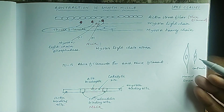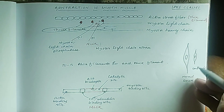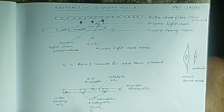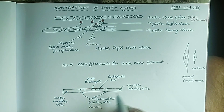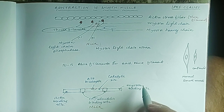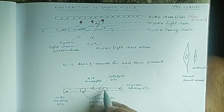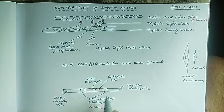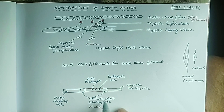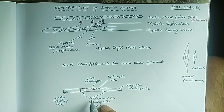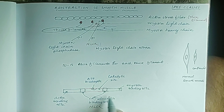Because of this phosphorylation, myosin gets the energy to bind with actin and there will be contraction of the smooth muscles. If we look at the structure of myosin light chain kinase, it has one actin binding site, one myosin binding site, and an ATP binding site present within the catalytic site of the enzyme. There are also two calcium-calmodulin binding sites.